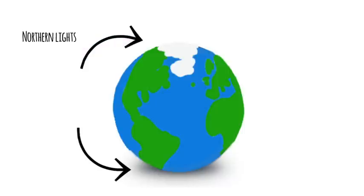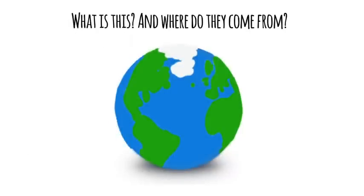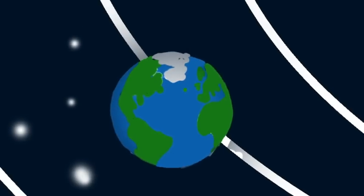In some places on Earth, you sometimes see beautiful green and red lights in the sky. They are called the Northern and Southern Lights, also known as the Aurora Borealis and Aurora Australis. What is this and where do they come from? Well, it all starts at our Sun.